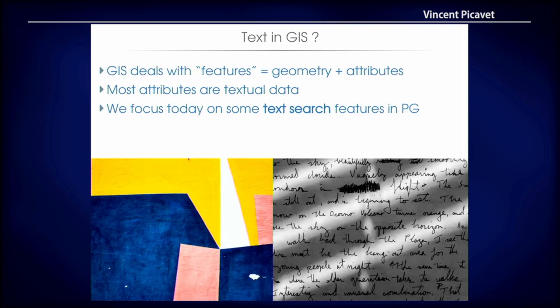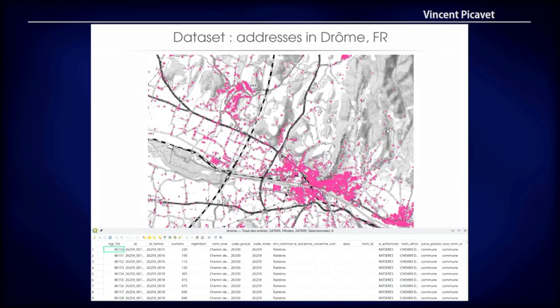I will focus on more advanced features. Today I won't exactly talk about GIS because in GIS we usually deal with features, and features are geometry and attributes. Most attributes are textual data, so it's very important to be able to handle this textual data. I will focus today on some text search capabilities in PostgreSQL. I will use a dataset which is a list of addresses in DROM, that's part of France. In this dataset you have points and in the attributes you will find the name of the commune, the city, the name of the street, which we will use for text search.